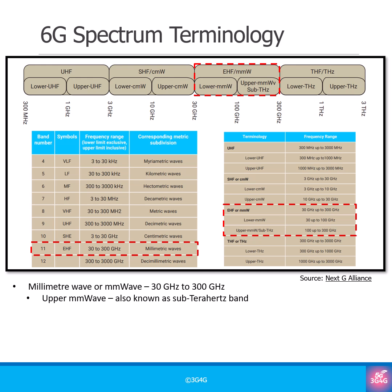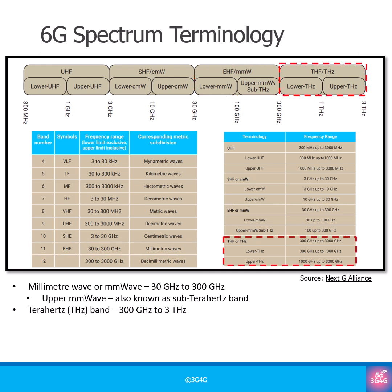This sub-Terahertz band is important because many 6G researchers are focusing on it for future communications. The Terahertz band itself extends from 300 GHz to 3 Terahertz. Even though some large organizations are researching this band for 6G, we don't believe it has strong support at the moment, especially given the limited success of widespread MM wave deployments.